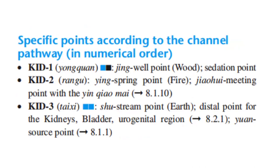Specific points according to the channel pathway in numerical order. Kidney 1 is the jing well point, and the wood point, which is also the sedation point. Kidney 2 is the yin spring point and the fire point. It is also the jiao hui meeting point with the Yin Qiao Mai.